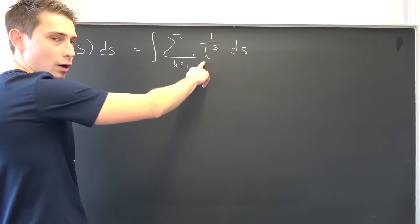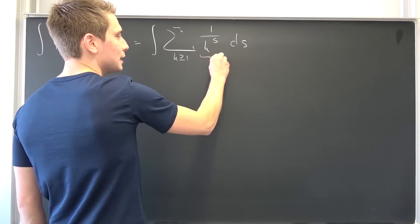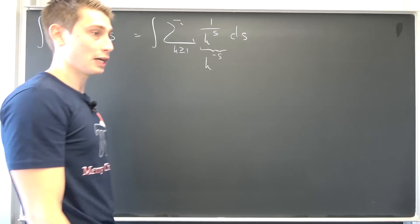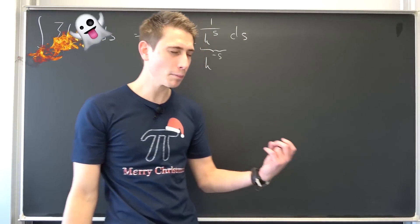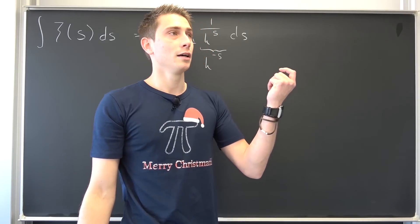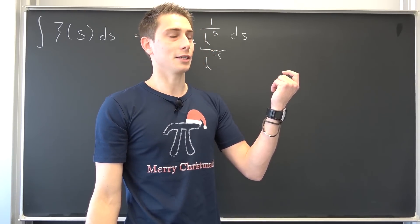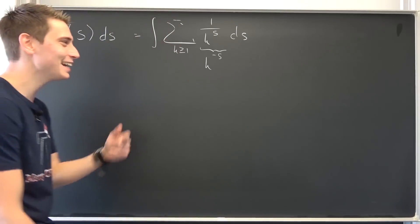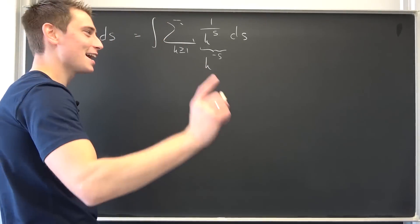Now, let me rewrite 1 over k to the s power a little bit. That's the same as k to the negative s power. Also, if you have a to the b power, then that's the same as e to the natural log of a times b. I had to think about it. Do not judge me.